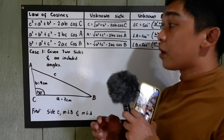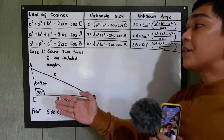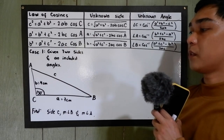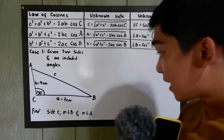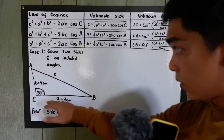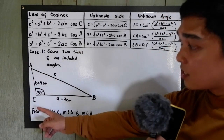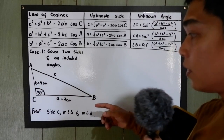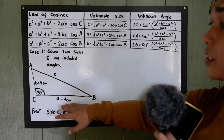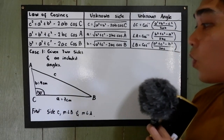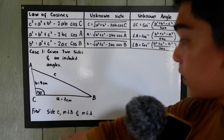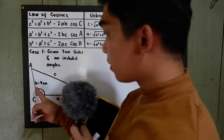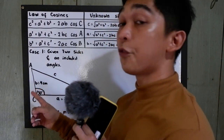Our first example is case number one: if we have two sides and an included angle given. We have our oblique triangle. Angle C is equal to 130 degrees, angle A is unknown, angle B is unknown, side a is equal to 7 centimeters, and side b is equal to 4 centimeters. We're going to find side c, measure angle B, and measure angle A.